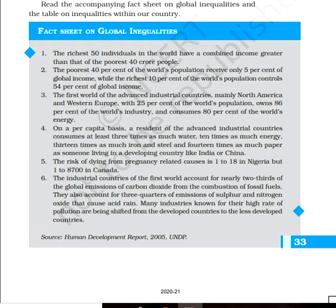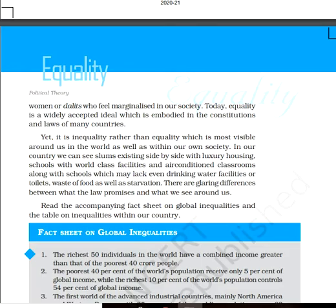If you see dying from pregnancy-related causes, it is 1 in 18 in Nigeria — meaning from 18 cases, one woman used to die — whereas in Canada, a developed country, out of 8,700 women, one used to die. This fact file shows the various areas of inequality across the world.